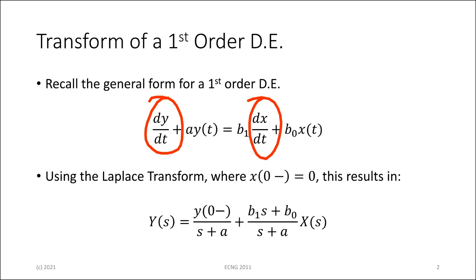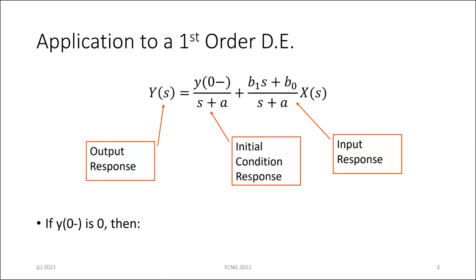And then if we take the Laplace transform of that equation, and we assume that the input didn't have any value before time zero, then it results in an equation looking like the one below. There are a couple of things about that particular answer — there's the first part of the answer here that deals only with the initial condition on the system. Y is the output.